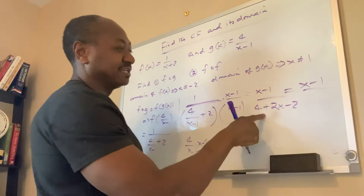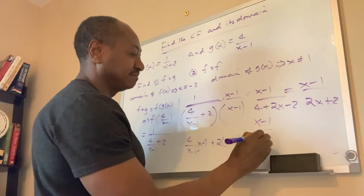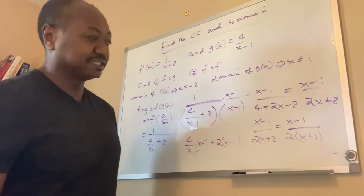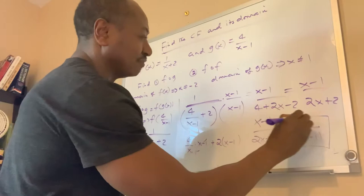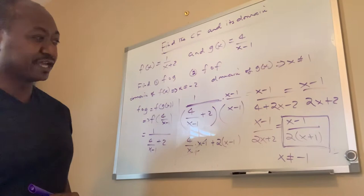Working this out, I have x minus 1 at the top, and at the bottom I have 2x plus 2, giving x minus 1 divided by 2x plus 2. Now, what is the domain of this function? The domain is that x is not equal to negative 1.